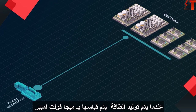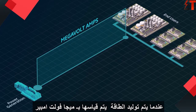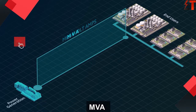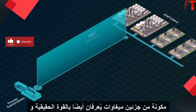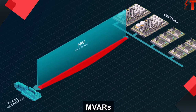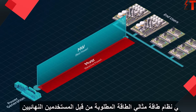When power is generated, it is measured in megavolt amps, or MVA. MVA is made up of two components: megawatts, otherwise known as real power, and megavars, or reactive power.